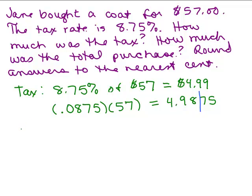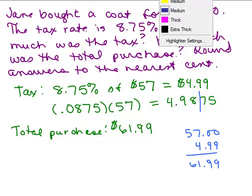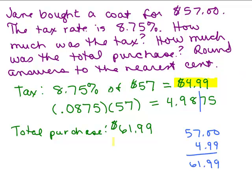Since the digit after the cents place is a 7, it goes up. So the tax is $4.99. What would be the total purchase? You would have to add that. Now here's how I would do it, I would add 5 dollars and take a penny off. If I add 57 plus 5, that's 62 dollars but it should be 61.99. So the tax is 4.99, the total purchase is 61.99.